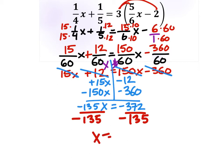So, x equals a positive 124 over 45. And we can simplify that by dividing both the numerator and denominator by 3. And that gives us our answer.